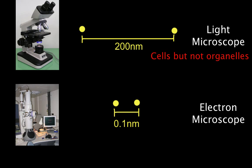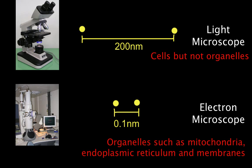If we use an electron microscope, however, because it has a higher resolution and is able to distinguish between two points that are much closer together, we can see organelles such as mitochondria, the endoplasmic reticulum and membranes.